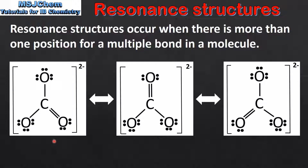Here we can see the three resonance structures of the carbonate ion. In each structure the carbon to oxygen double bond is located in a different position. The number of resonance structures for a molecule is determined by the number of different Lewis structures that can be drawn.